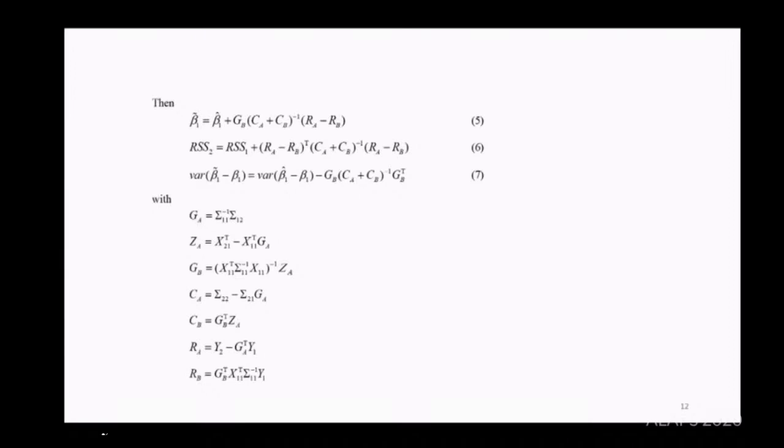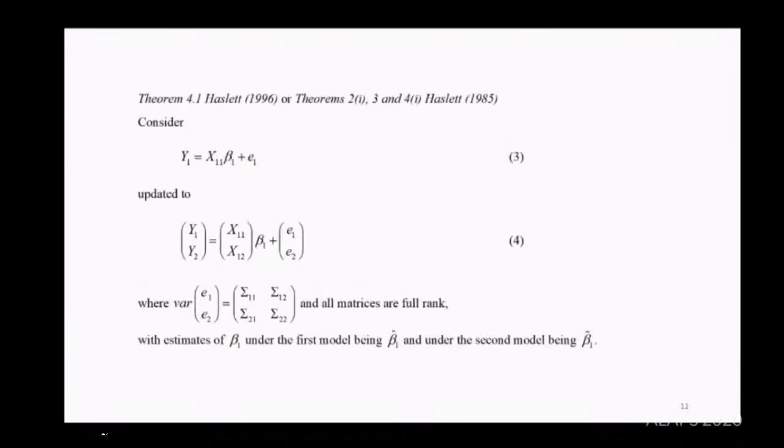The answer is these equations five, six, and seven. This matrix CA plus CB to the minus one occurs in all of them. In six and seven, the difference relates to a quadratic form. In the first, it adds to the residual sum of squares. In the second, it subtracts from the variance of the parameter estimates less the actual value. There's not a lot of extra matrix inversions given that if you fit model three first, then Sigma one to the minus one is known. Consequently, you don't need to invert matrices of larger order than the extra Y2 you've added.